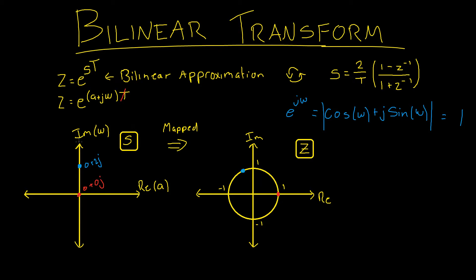Points along the imaginary axis give a marginally stable filter, meaning it will oscillate forever. We get a similar result with the mapping to the z-plane: any value outside the unit circle causes an unstable filter, while all values inside cause a stable filter. Now let's test a point given by negative 1 plus j. The plus j gives us a value on the unit circle, and the negative 1 in the alpha value determines the length of the arc — mapping to a point inside our unit circle, which is expected because we were mapping a point in the left half plane.